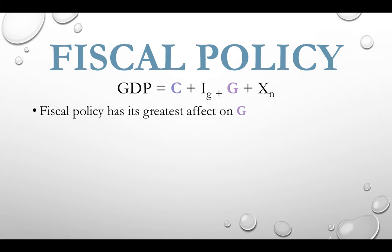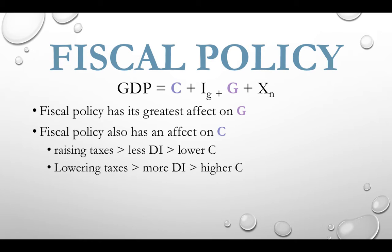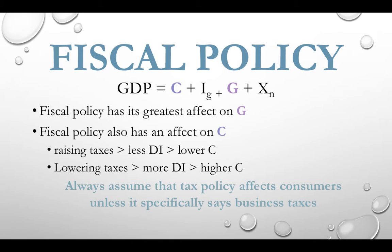Fiscal policy has the greatest effect on G — government spending — in our equation, because government can spend and put money directly into the economy. Fiscal policy also affects C, consumption. Consumption is affected through raising or lowering income tax. If the government raises income taxes, that leads to less disposable income, which leads to lower consumption. On the flip side, if the government lowers taxes, that will increase disposable income and lead to higher consumption. Always assume, unless specifically mentioned, that tax policy affects consumers, not businesses. If we want business taxes to be affected, it will specify that taxes are raised or lowered on businesses.